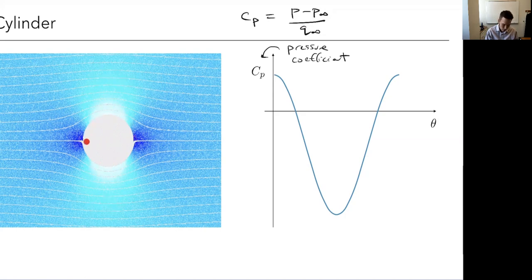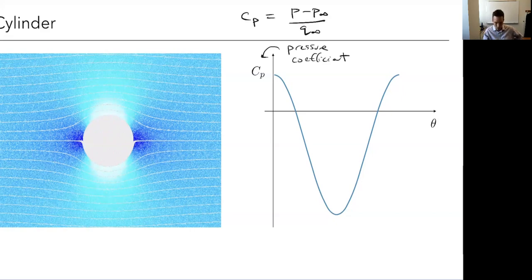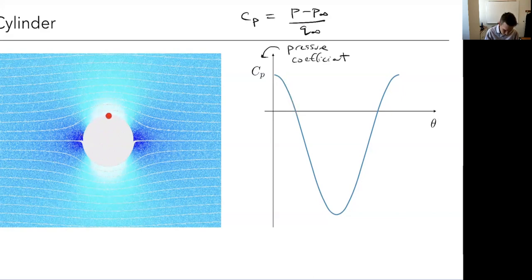The pressure coefficient is the difference in pressure relative to free stream, divided by the dynamic pressure. Plotting CP vs. angle theta from front to back of the cylinder: at the front, CP equals one — the highest pressure. As I work around to the top, it drops to minus three in the idealized case, then comes back up to plus one at the back. Because the flow is symmetric top-to-bottom and front-to-back in the inviscid case, there's no lift and no drag.